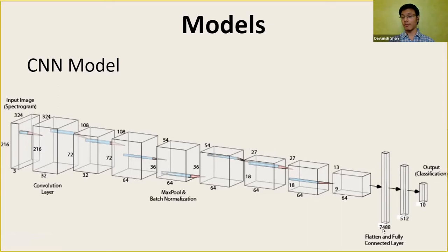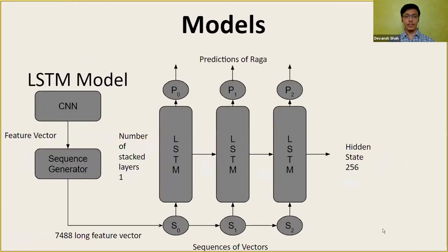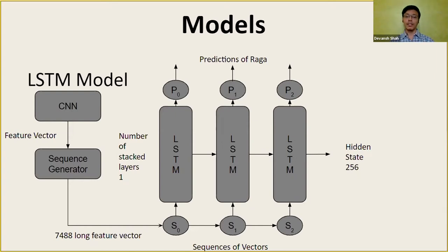While training the CNN, we have two more fully connected layers, and the size of the last layer is the number of classes in the dataset. While training the LSTM, we remove the fully connected layers and use the flattened layer of length 7488 as a feature vector. The CNN produces feature vectors for each spectrogram, then we make a sequence of three or five such feature vectors as one input to the LSTM, which takes in one such sequence and gives one answer.